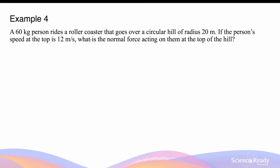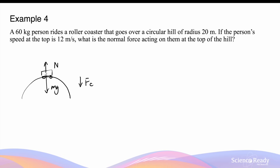A 60-kilogram person rides a roller coaster that goes over a circular hill of radius 20 meters. If the person's speed at the top is 12 meters per second, what is the normal force acting on them? This is also vertical circular motion, but instead of tension, the additional force besides the weight is the normal force of the hill acting upward. At the top, the net downward force is the centripetal force, so weight minus the normal force equals mv² over r.